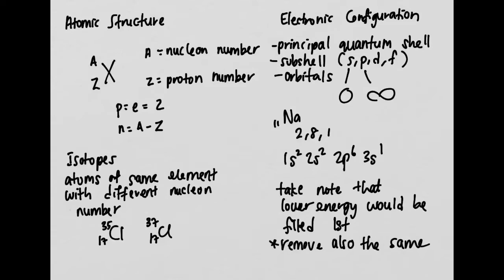For atomic structure, we need to know that if you have element X written with A on top and Z on the bottom, A is the nucleon number and Z at the bottom is going to be the proton number. So if they ask you the number of protons, we look at Z.